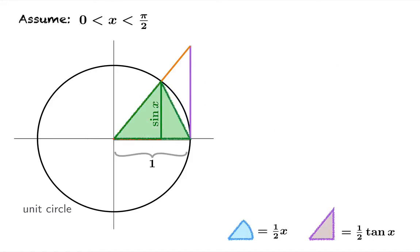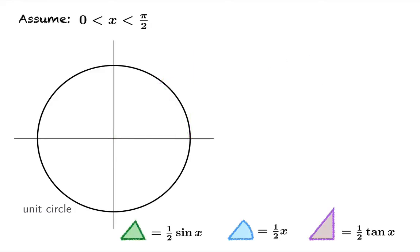Finally we're going to measure the area of this triangle. Half the base times the height in this case is just one half sine x. So we've got these three regions and if we go back to the picture and compare them we can see that the purple triangle is greater than the area of the blue sector which in turn is greater than the area of the green triangle.